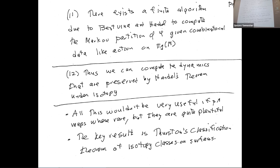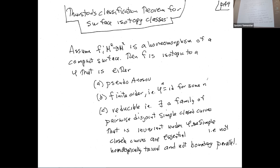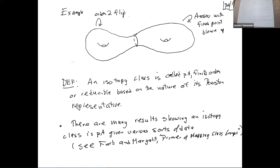There are other tricks to understand dynamics beyond just finding the Markov partition. All this would be pointless if there were very few pseudo-Anosov maps, but as Toby alluded to, the typical isotopy class contains a pseudo-Anosov. For the classification theorem, we need pseudo-Anosovs on boundary — you make it look on the boundary like blowing up as if it was smooth. The classification theorem: if you're a homeomorphism of a compact surface, you're either pseudo-Anosov, finite order, or reducible — meaning you cut it into pieces.